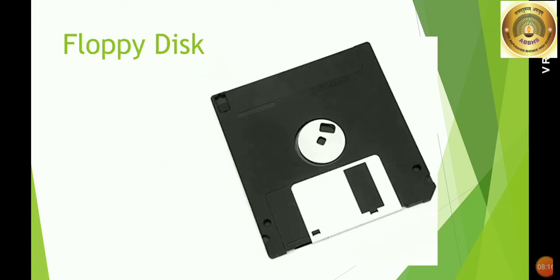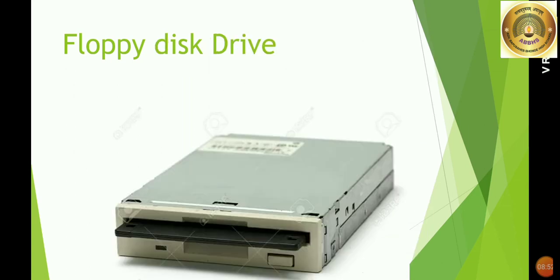Next is floppy disk. A floppy disk is a thin and flexible magnetic storage device. It is a removable disk. Its size is about 3 and a half inches with a storage capacity of 1.44 MB. You insert the floppy disk into the floppy disk drive.